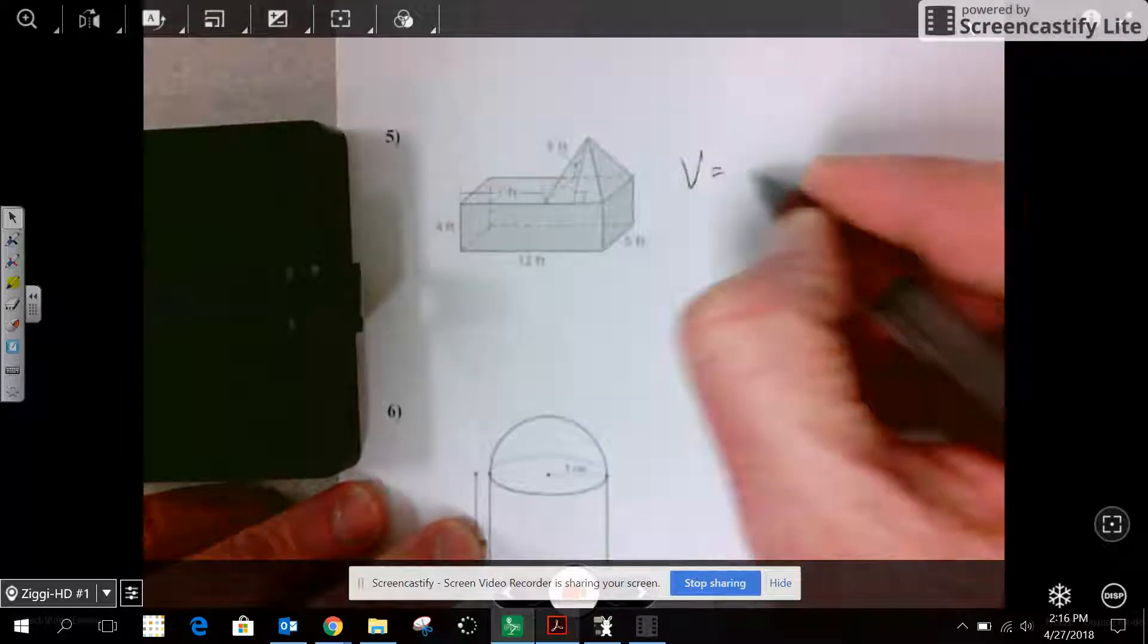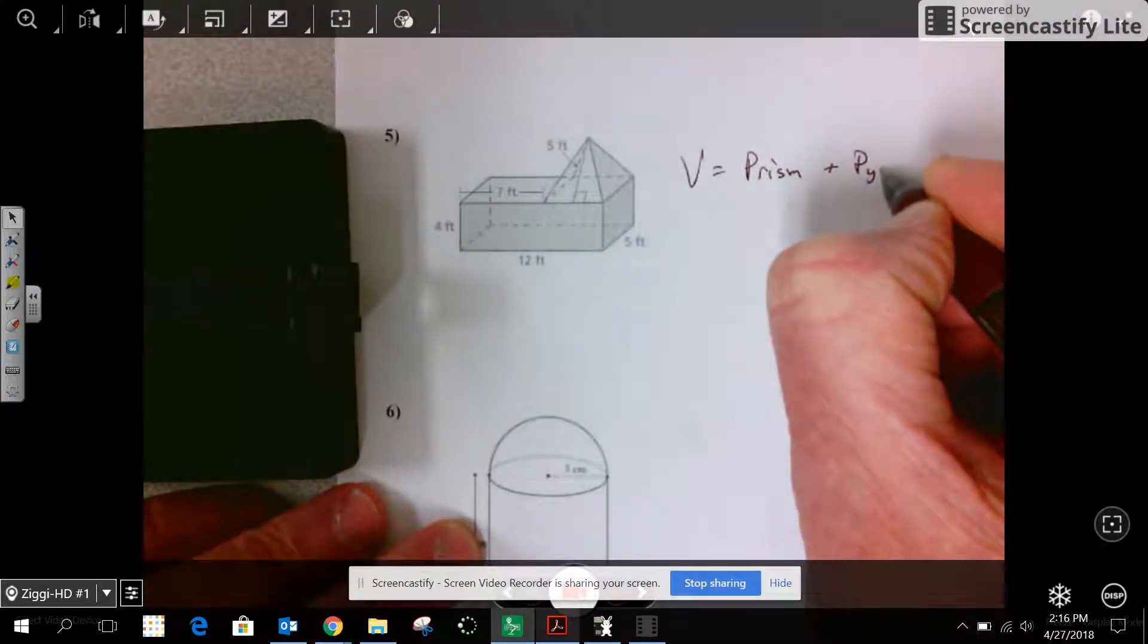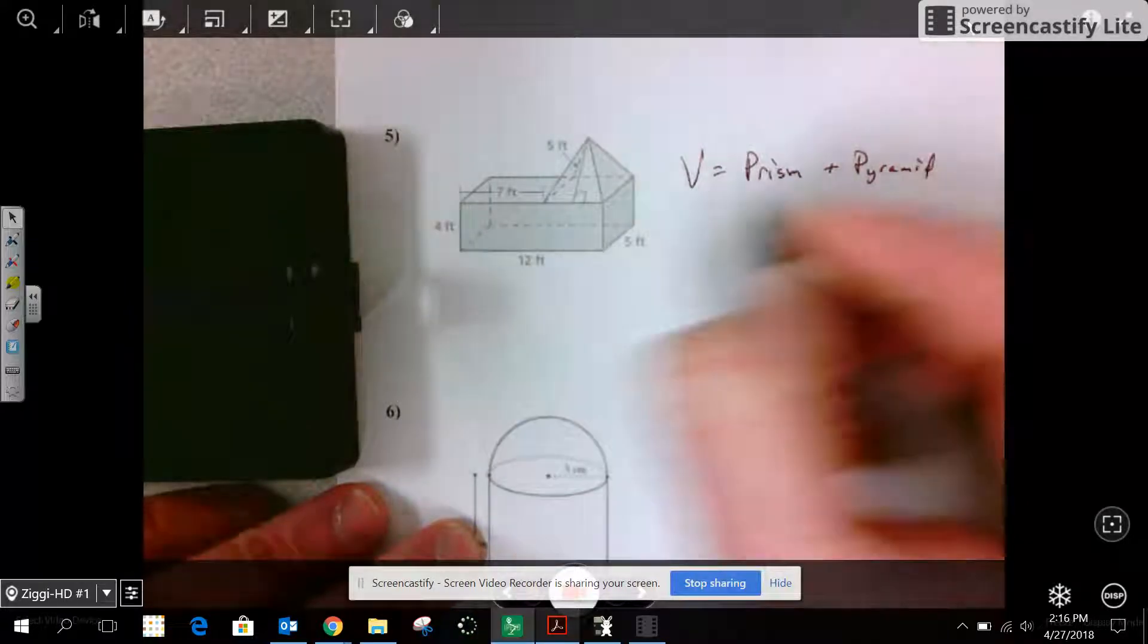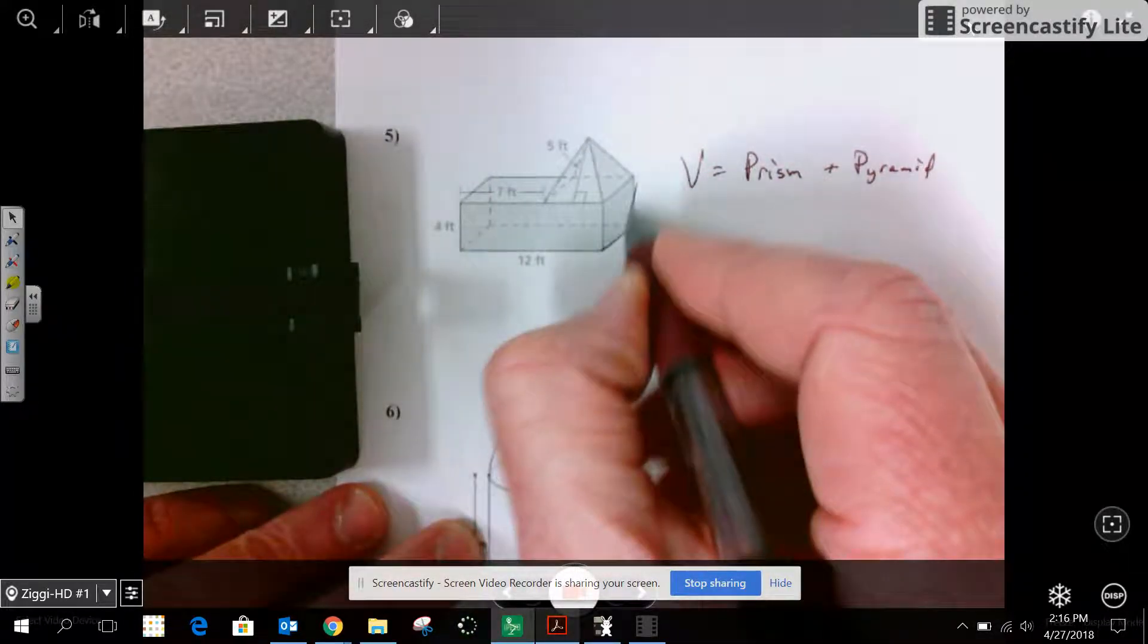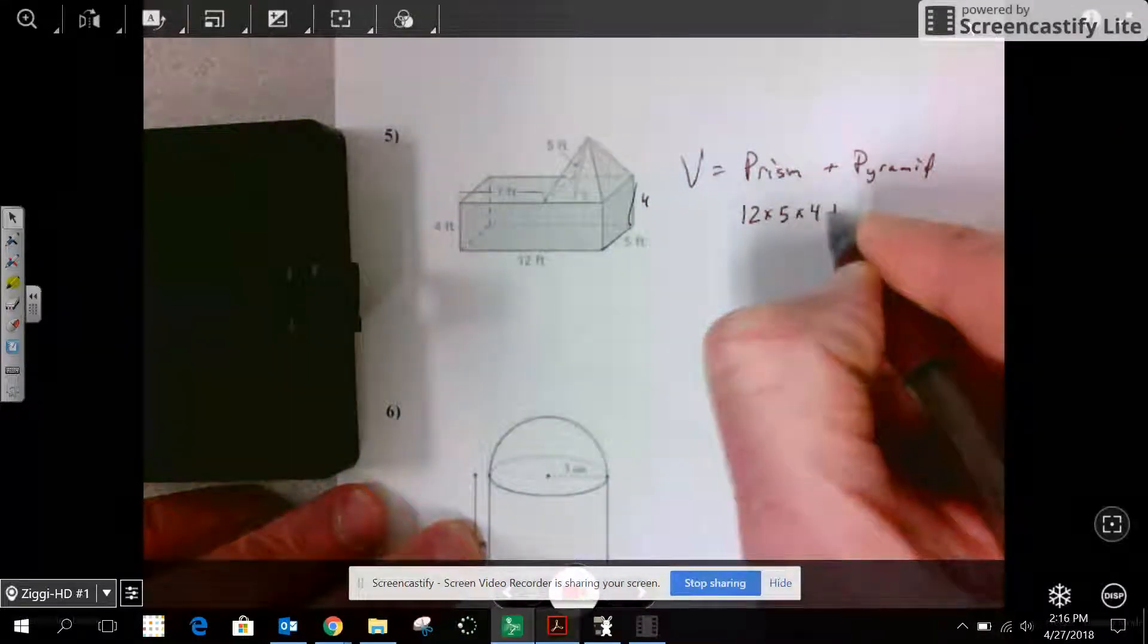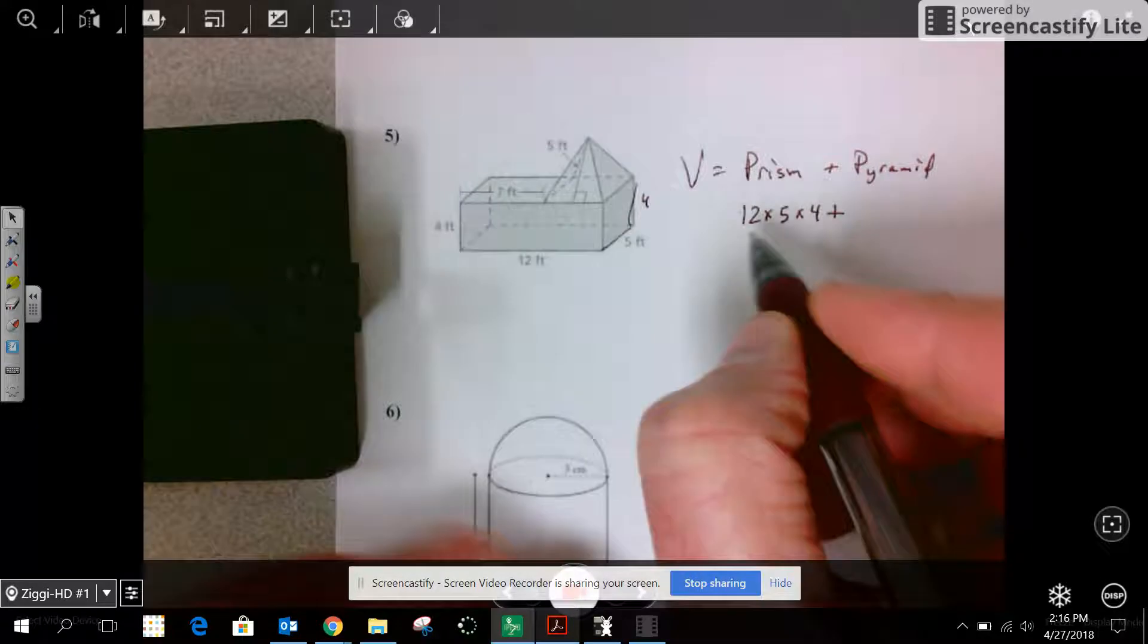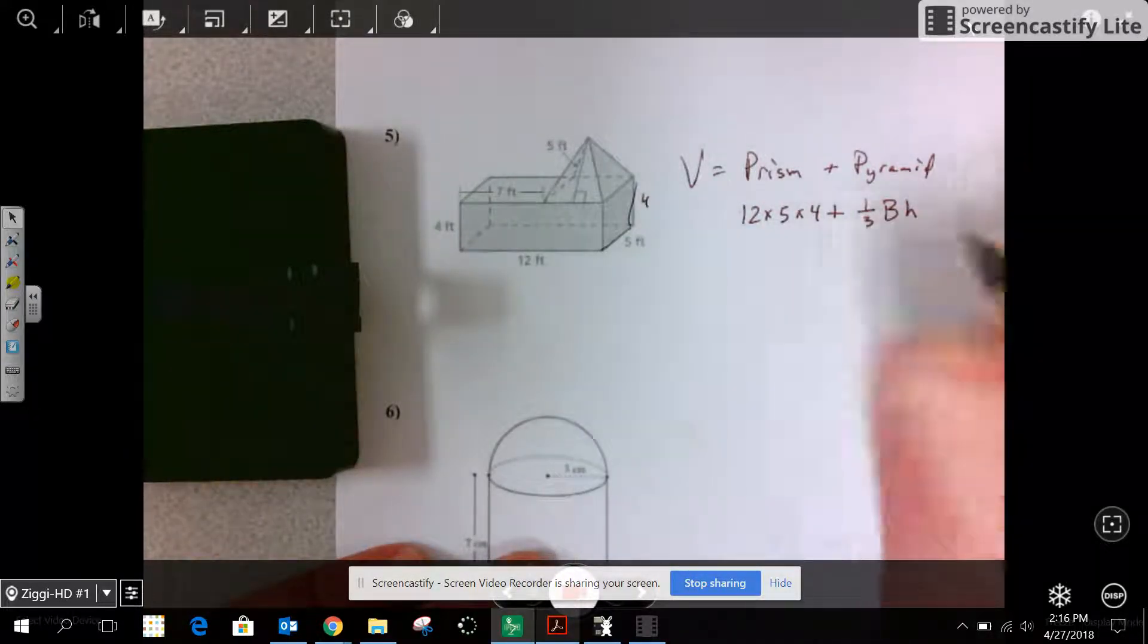Here I have a prism and a pyramid. So I have 12 times 5 times 4 plus pyramid is one third the area of the base times the height.